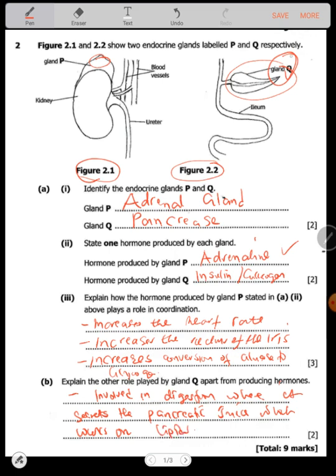Once the pancreatic juice is produced by Q, it passes into the duodenum. That's where fatty digestion or lipid digestion is done. There you go, we've answered that question.